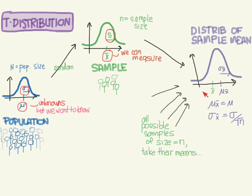However, we do know some things about this distribution. We know it has a mean, which we call mu sub x-bar, and that mean is equal to the population mean. It also has a standard deviation, which we call the standard error, which is equal to sigma over the square root of n.